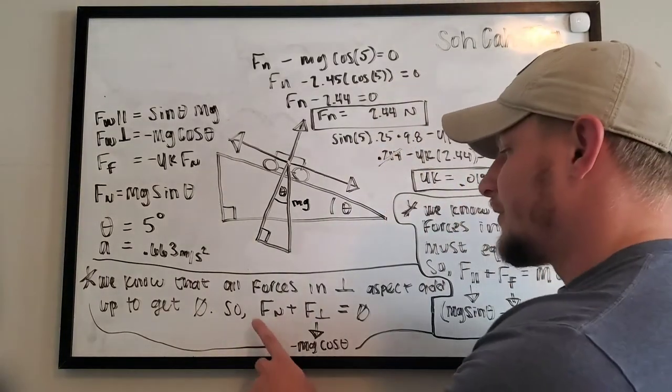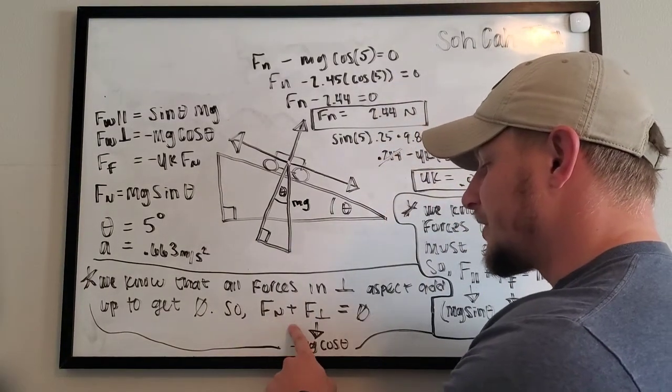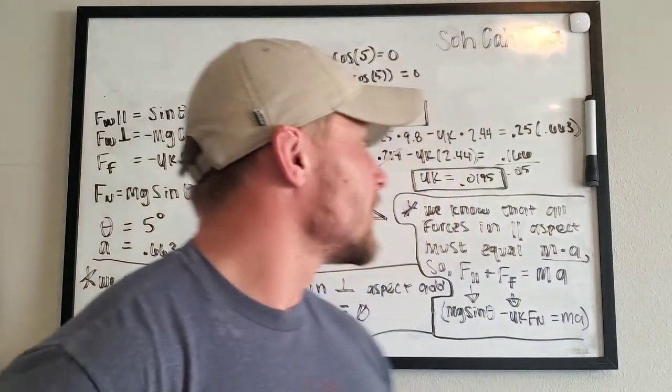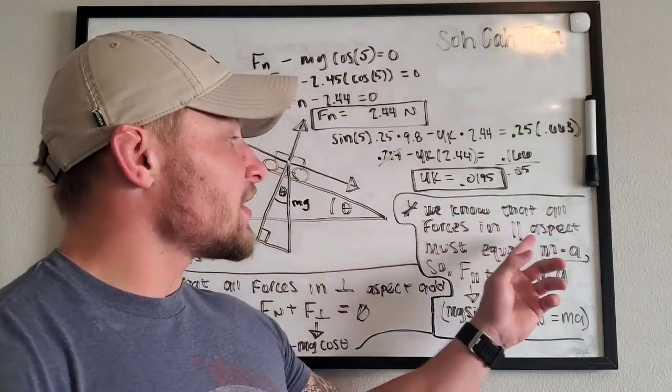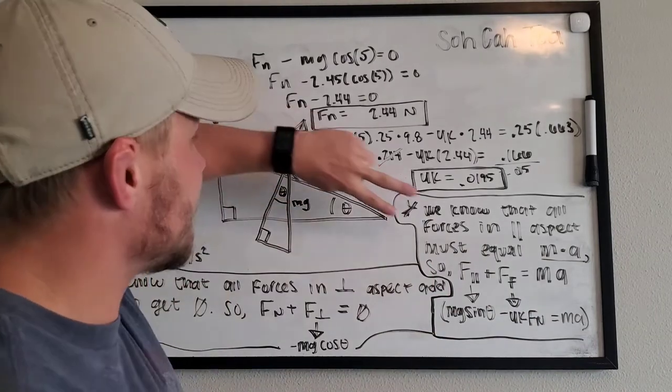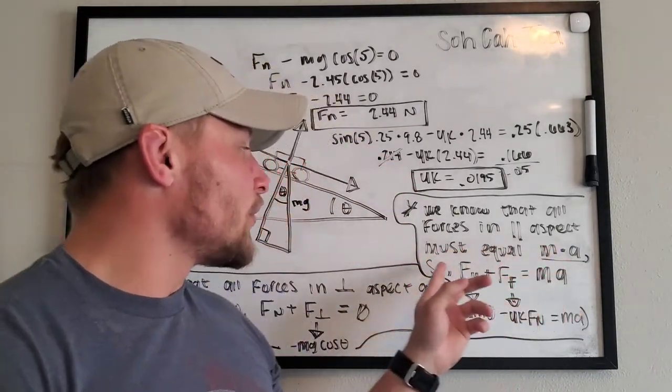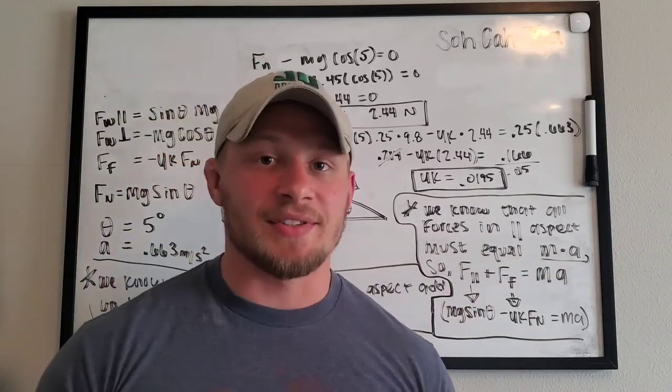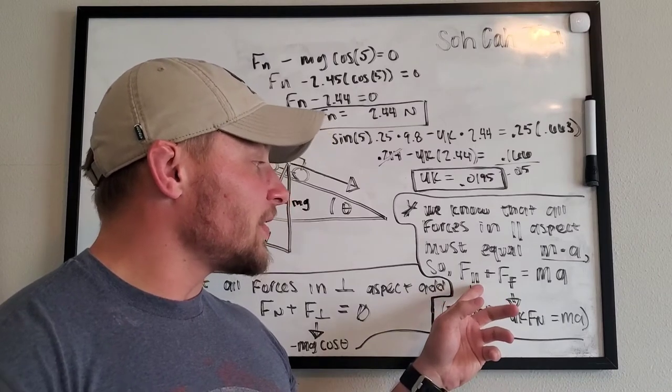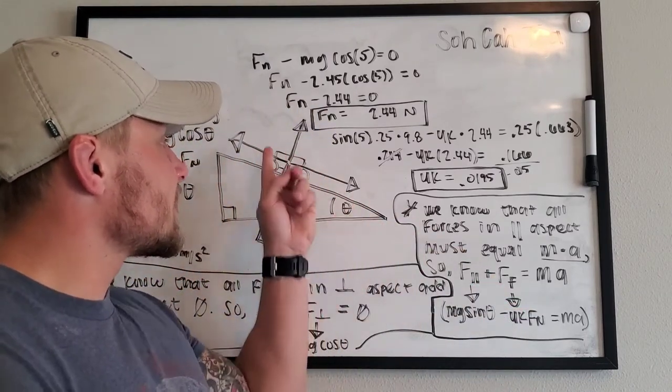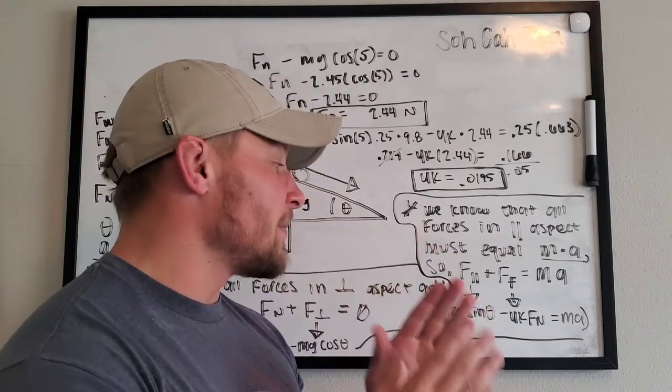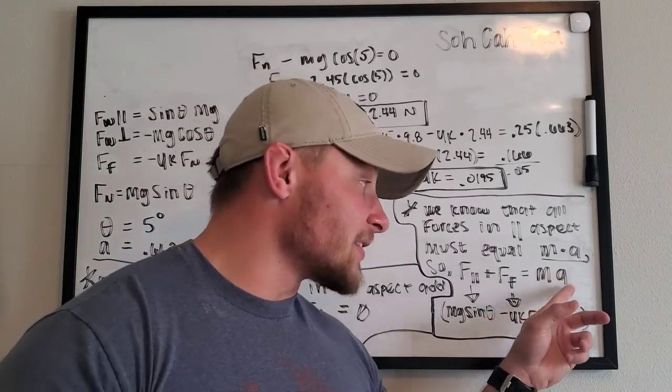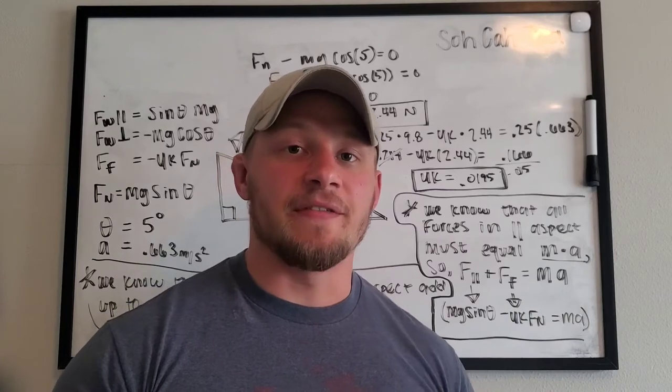And once we know that, force of normal force plus the forces in a perpendicular aspect equals zero. Another thing to note, we know that all the forces in the parallel aspect, that's this aspect on the ramp, we know that all those forces must equal mass times acceleration. Remember, force equals mass times acceleration. So the forces in the perpendicular plus the friction force, which are the two forces acting on the cart in the parallel direction of the ramp, we know that that will equal the mass of the cart times its acceleration. And we can get its acceleration from the graph after we video it.